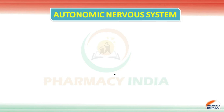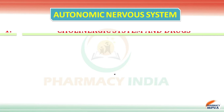I'm a senior, so today in this video we are going to discuss the classification of the autonomic nervous system and their mnemonics — how to learn the autonomic nervous system classification. The first classification is the cholinergic system and drugs.